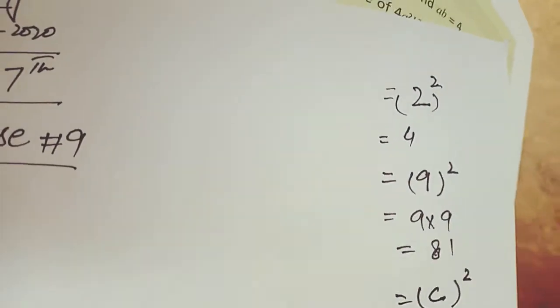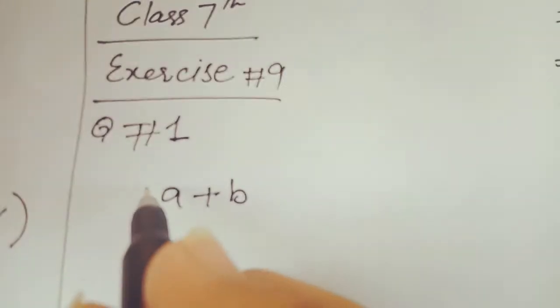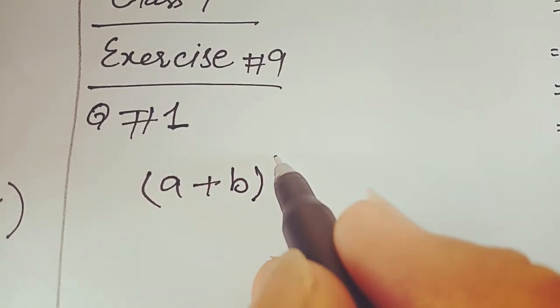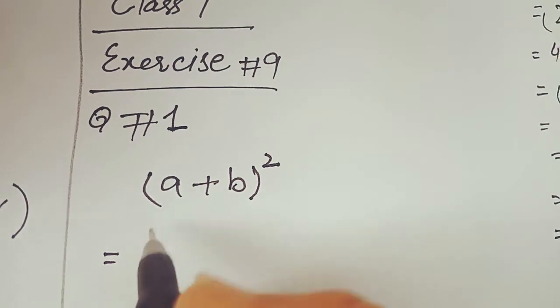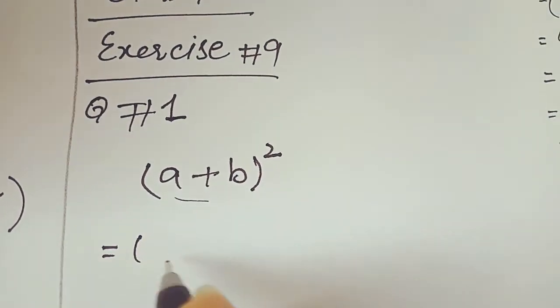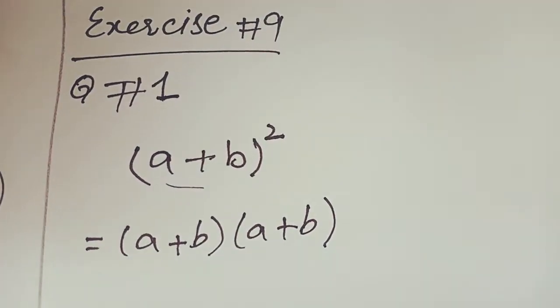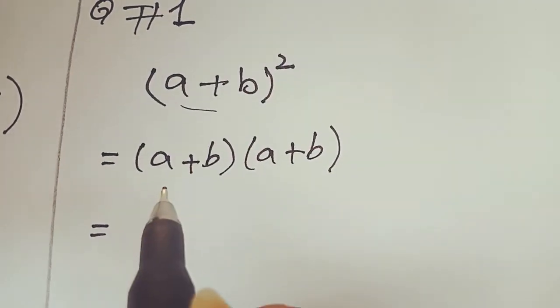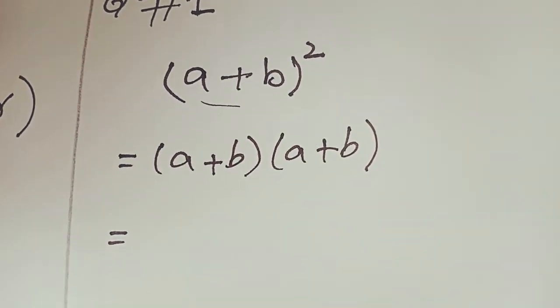Now, if there are 2 terms like A plus B and you have to find the square, what will you do? You will take a bracket and apply a square. Think of this as a single term — you will multiply it as A plus B multiplied by A plus B. In the previous chapter we learned about multiplying algebraic expressions.